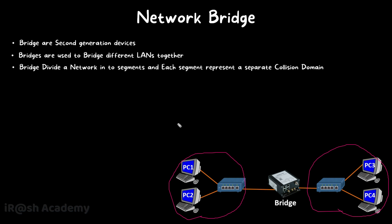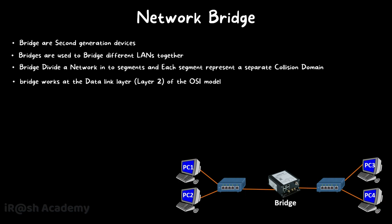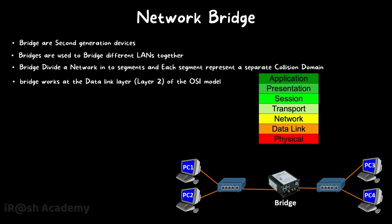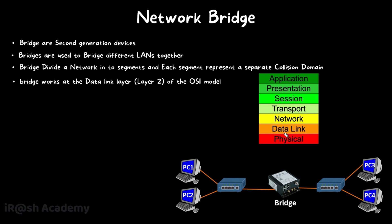In this way we can increase the speed of the network and decrease the possibility of collision. Bridges work at the Data Link Layer of the OSI model, which is a framework used to describe the functions of a networking system, from Layer 1 to Layer 7. Network hubs work at the Physical Layer, but network bridges work at the Data Link Layer, operating based on the MAC addresses of devices.